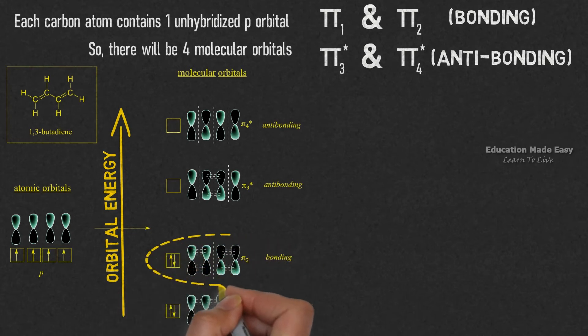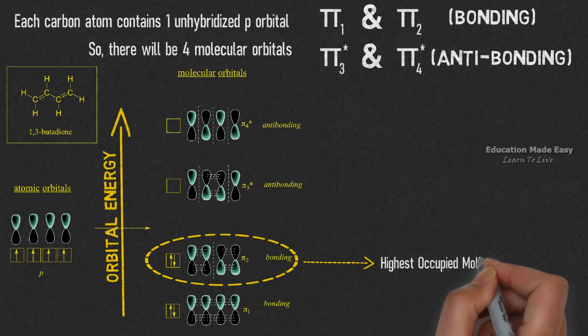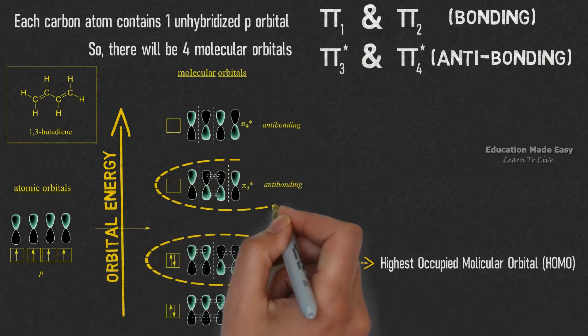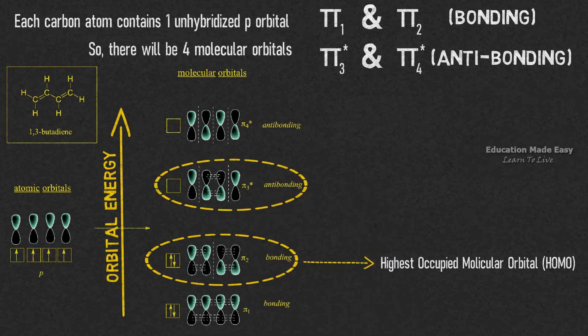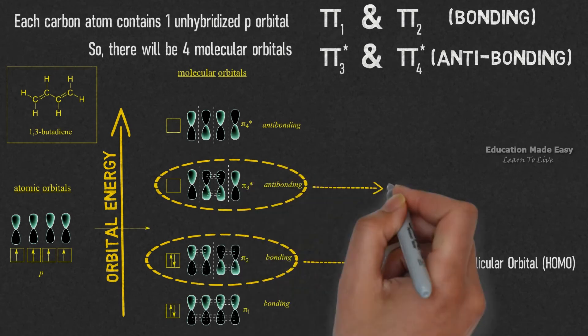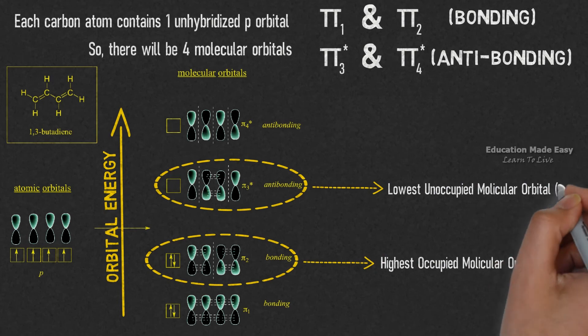From the energy level diagram, we can notice that pi2 bonding molecular orbital is the highest occupied molecular orbital, also known as HOMO, and pi3 star antibonding molecular orbital is the lowest unoccupied molecular orbital, also known as LUMO.